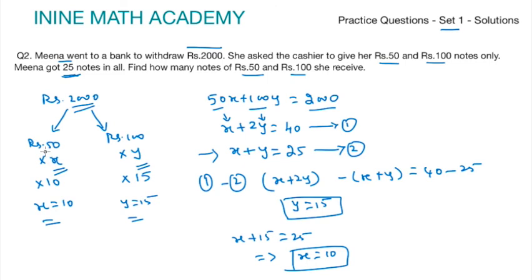If you want you can verify: 50 into 10 is 500 rupees, 100 into 15 is 1500 rupees. So 500 plus 1500 is 2000 rupees. Keep visiting our website www.inine.in. We will update several such question sets and you can get solutions for this also. All the best for your exam preparation. Thank you.